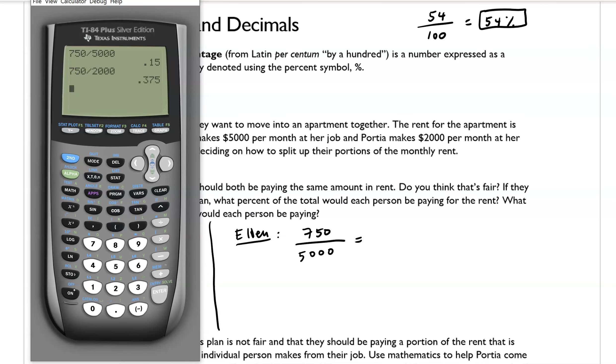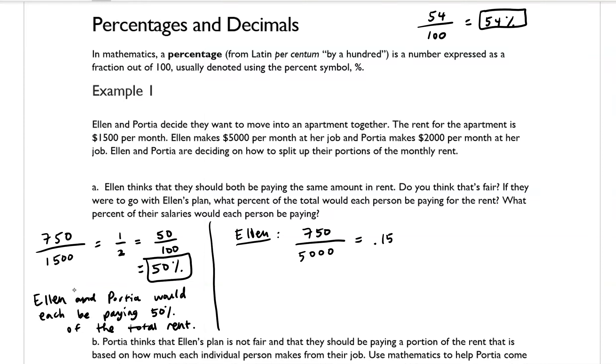So I'm going to use a calculator, and I've already calculated that. So that's equal to 0.15. And the way that we convert a decimal into a percentage is by moving the decimal place over two times and then throwing on the percent symbol. So that tells us that Ellen would be paying 15% of her paycheck towards rent.